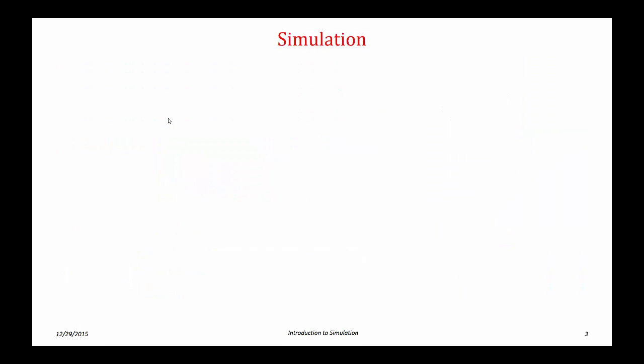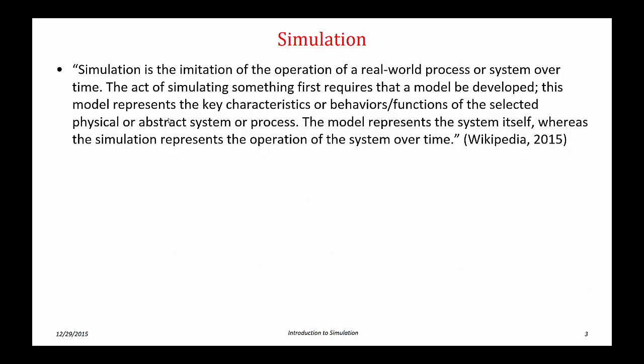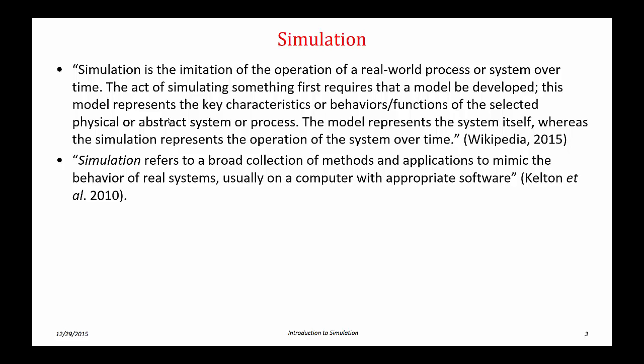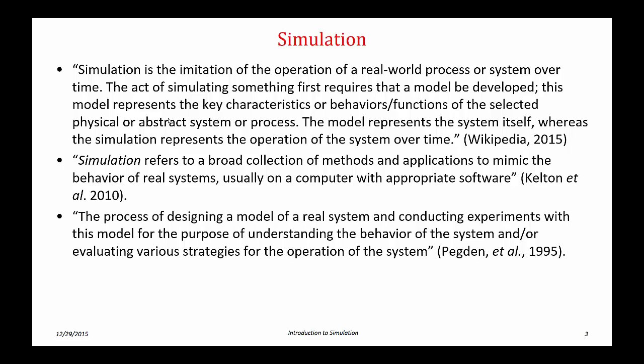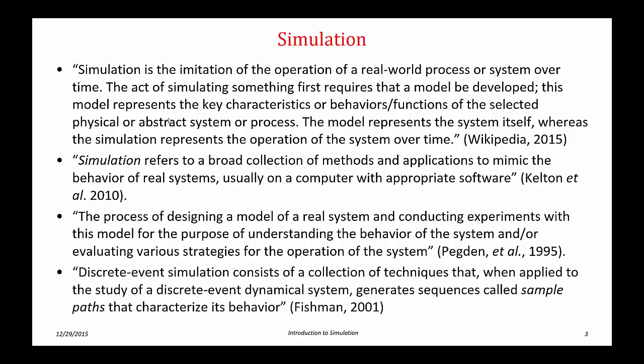Let's start out talking about some definitional material. From Wikipedia: simulation is the imitation of the operation of a real world process or system over time. The act of simulating something first requires that a model be developed. This model represents the key characteristics or behaviors and functions of the selected physical or abstract system or process. The model represents the system itself whereas the simulation represents the operation of the system over time. Another definition: simulation refers to a broad collection of methods and applications to mimic the behavior of a real system, usually on a computer with appropriate software. Also: the process of designing a model of a real system and conducting experiments with this model for the purpose of understanding the behavior of the system and evaluating various strategies for the operation of the system. And finally, discrete event simulation consists of a collection of techniques that when applied to the study of a discrete event dynamical system generate sequences called sample paths that characterize the system's behavior.